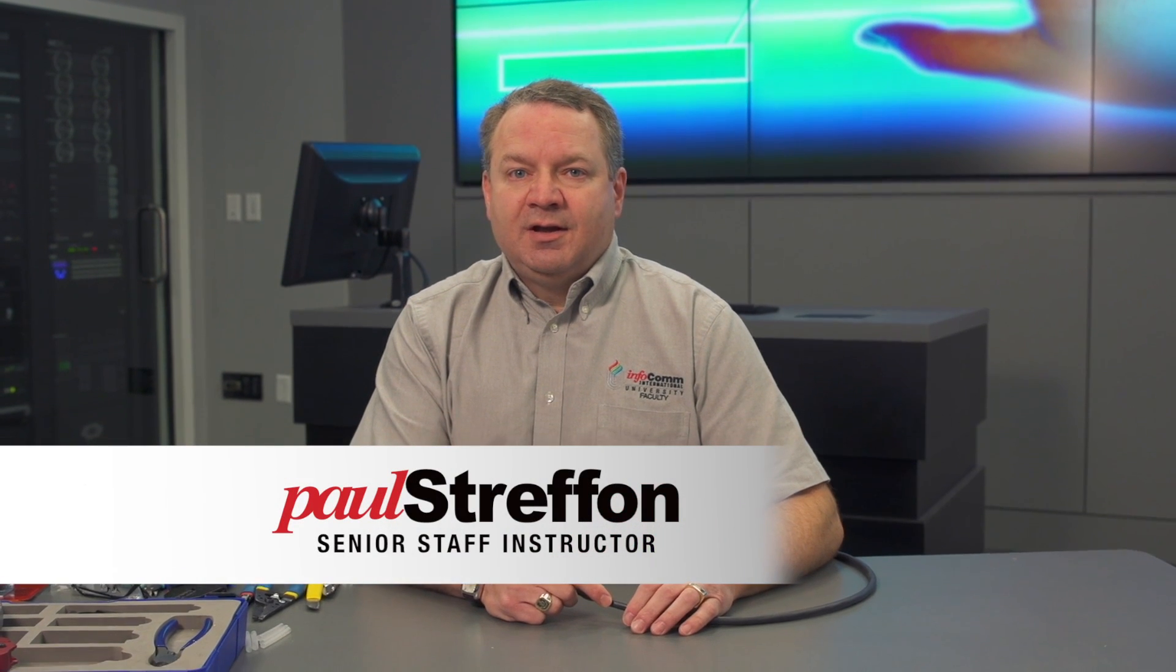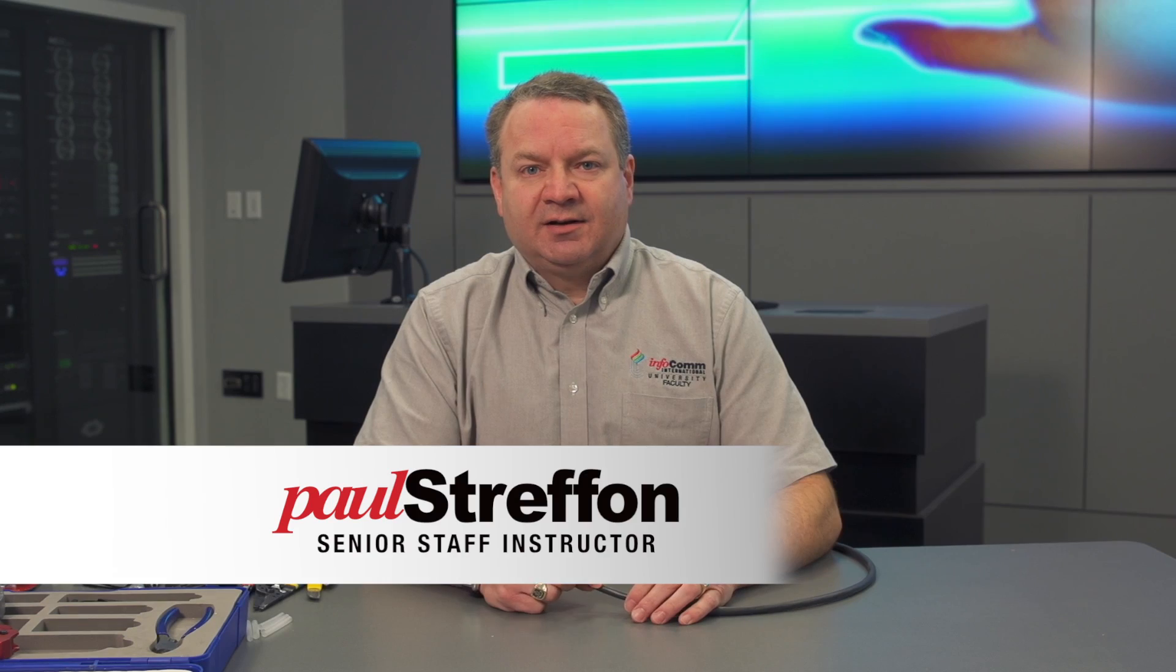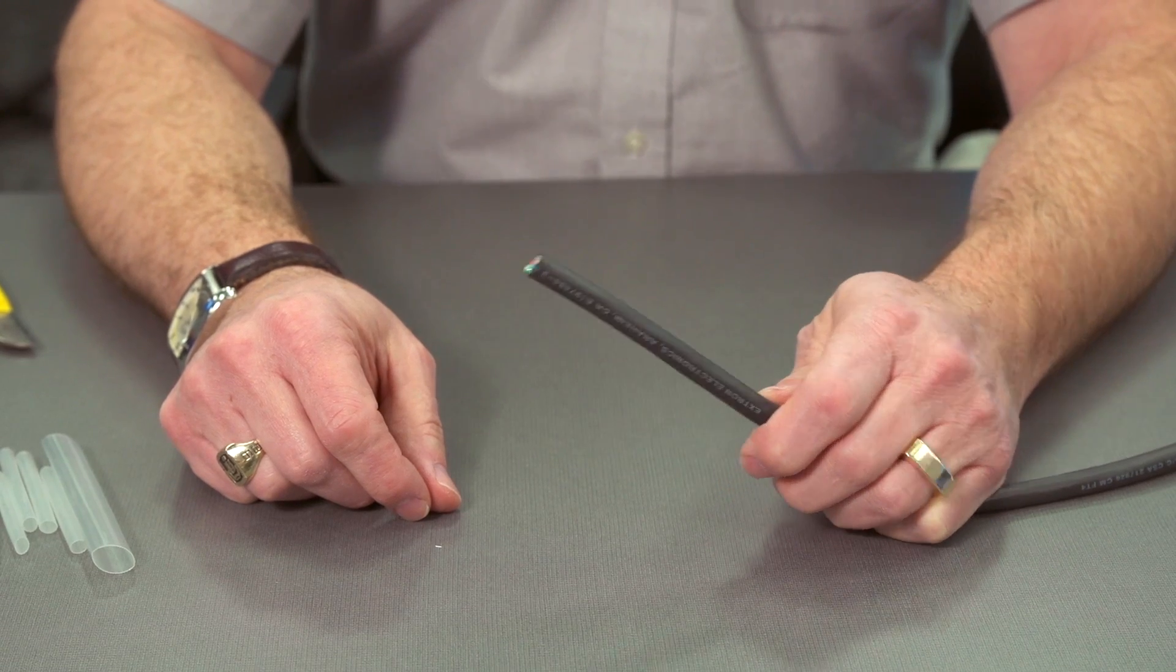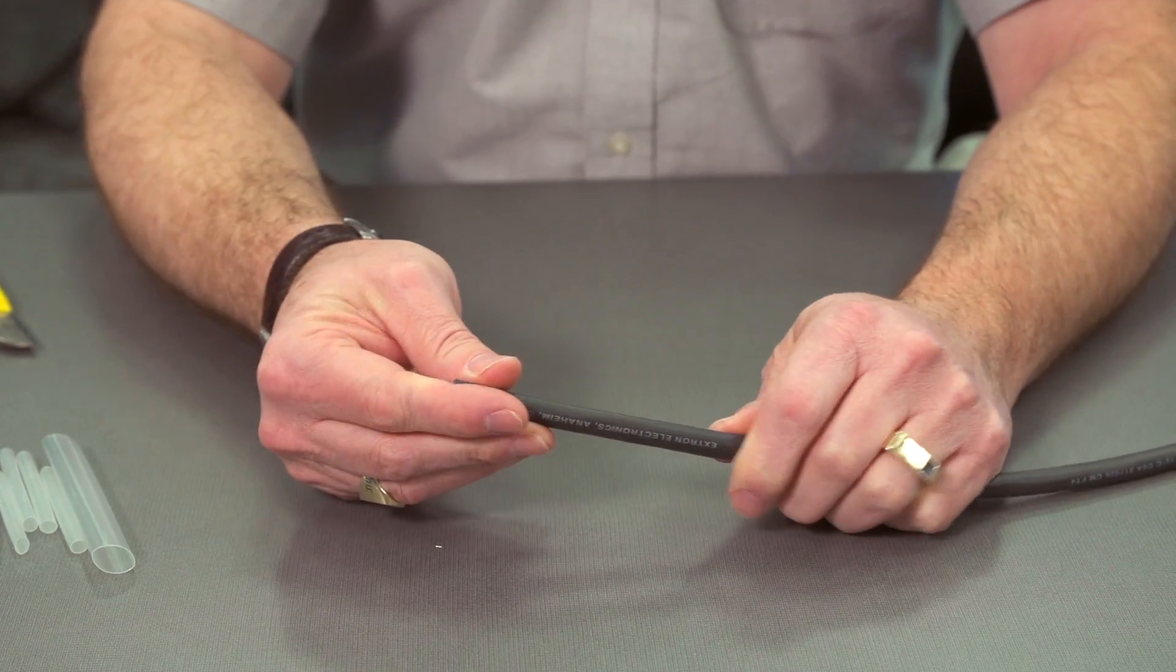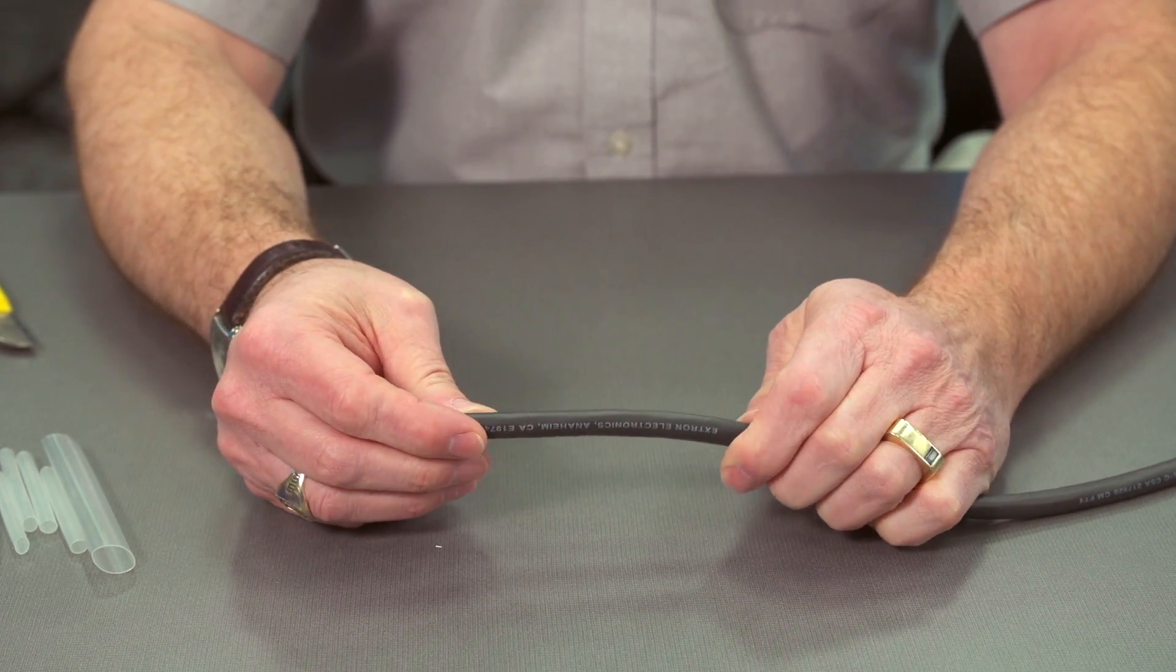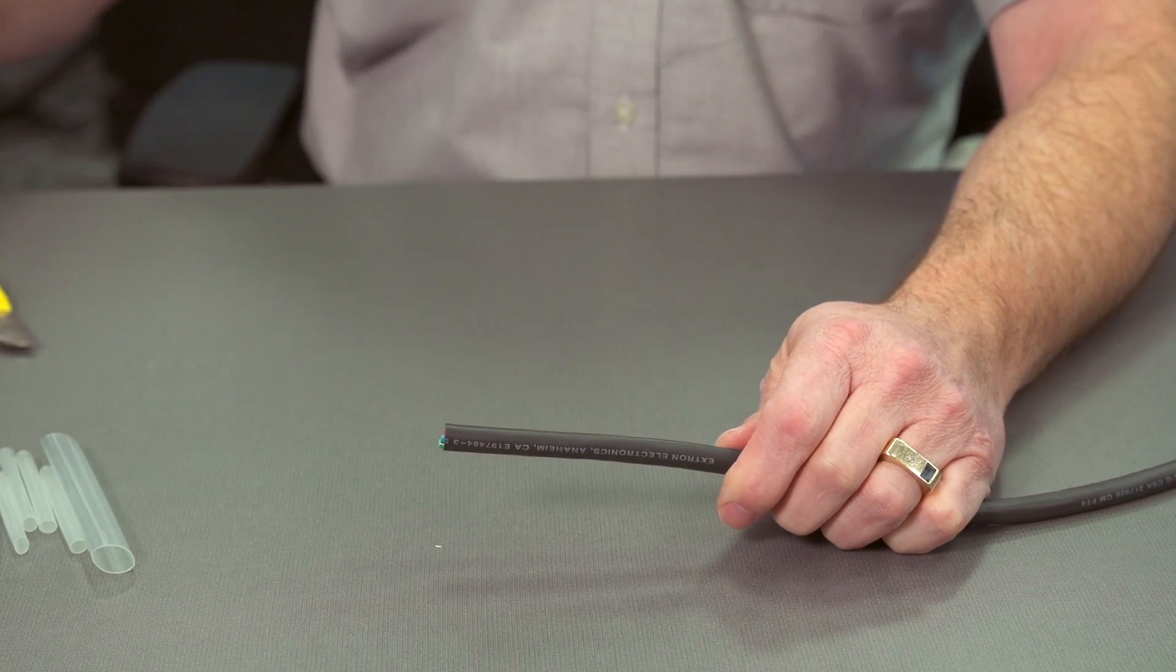Now we're going to talk about crimping our Mini Hi-Res B&C connectors onto RGBHV cable. We've got our cable, our Mini Hi-Res RGBHV cable, and we want to put those crimp on some B&C connections to that.